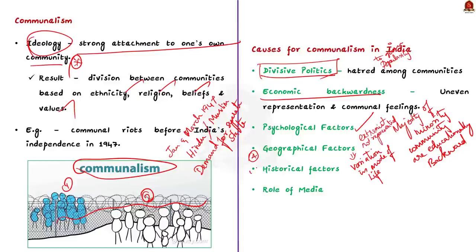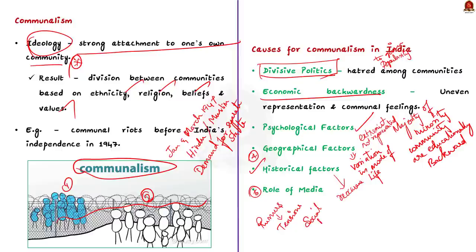The fifth cause is historical factors. For example, if communal violence happened in Chennai on a historical day a year back, the probability of reoccurrence of communal riots there is twice stronger than in a town where such riots have never happened. Finally, the role of media is also a very important cause. Media in India often spreads rumors about communities to create sensation, resulting in further tension between rival religious groups. Social media has also emerged as a powerful medium to spread messages relating to communal tensions.